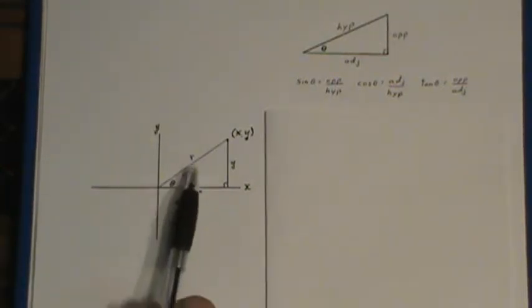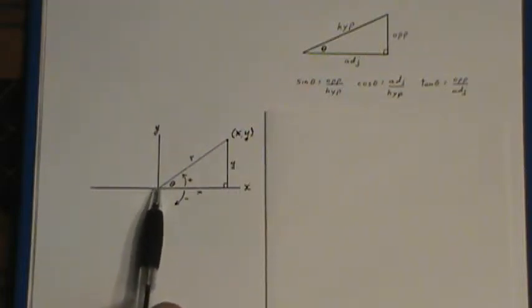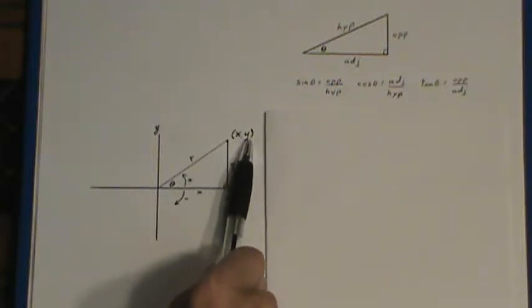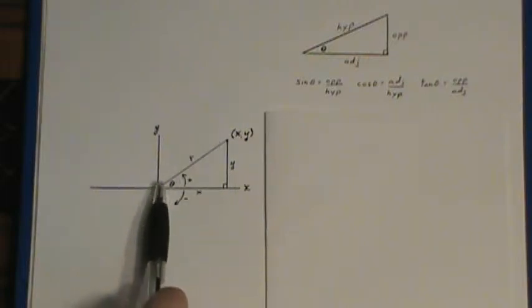Now when we put the angle in a coordinate system we can give what's called the terminal arm a point. This is a point on the terminal arm (x,y) and we use the letter r for the distance from the origin to the point.